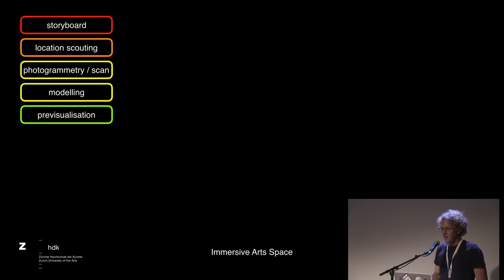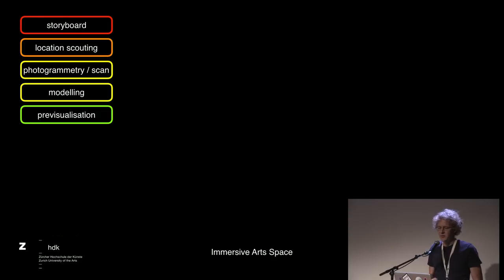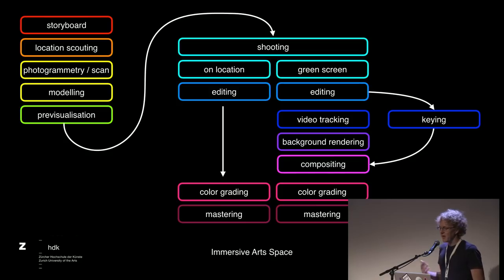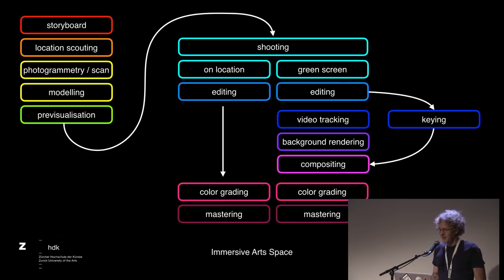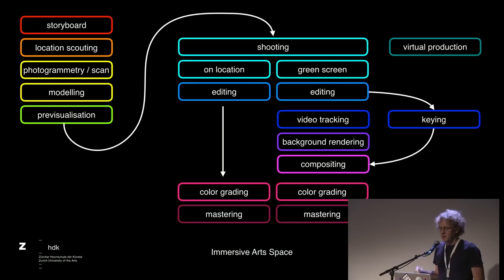Here's a quick overview of the process: storyboard, location scouting, photogrammetry or scan, modeling, previsualization, then shooting with two versions — one on location, one on green screen. I wish I could tell you Blender was used in any of those steps, but unfortunately that's not the case — otherwise my title would have been different. But there was this virtual production part happening through the green screen shot.